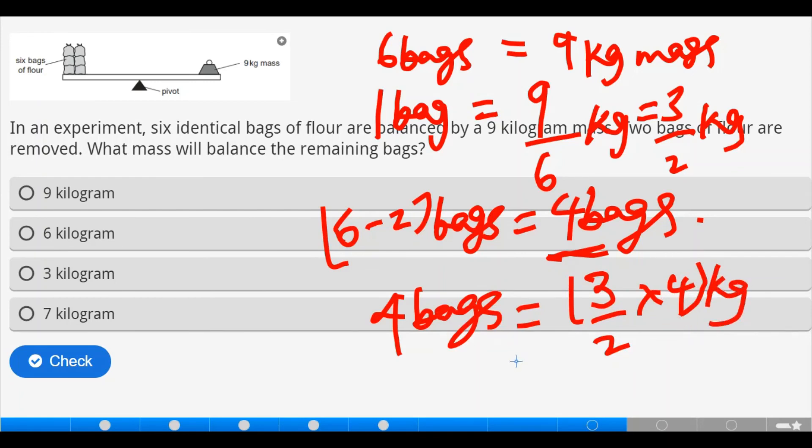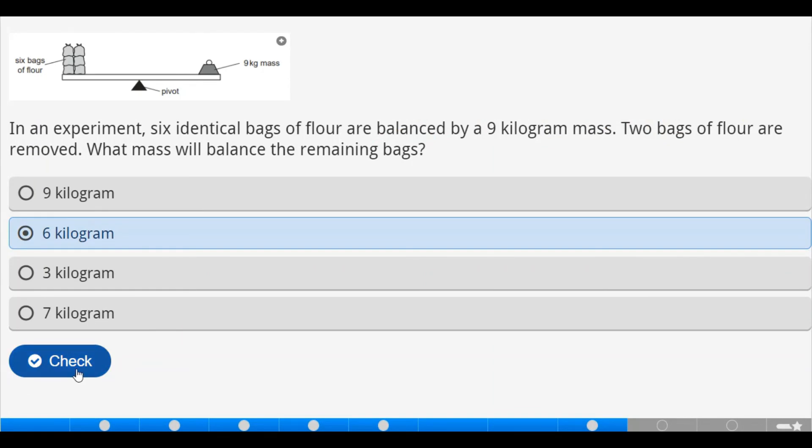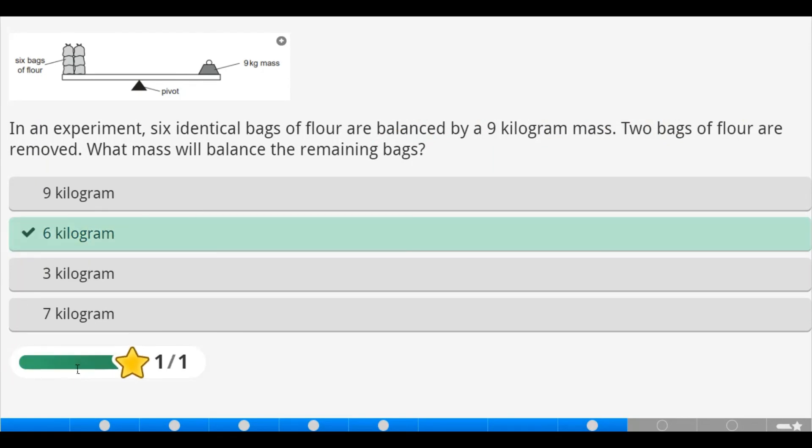And that is what? For 4 bags, we now have 3 over 2 times 4. So we check, it's in kilogram. So 2 into 4 is 2. 3 times 2, that is 6 kilograms. Do we have it as an option? We check. So 6 kilograms, then we check. That's correct.